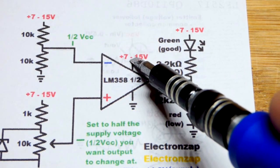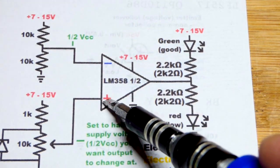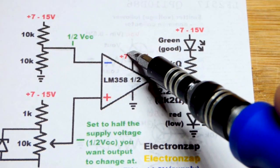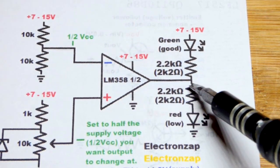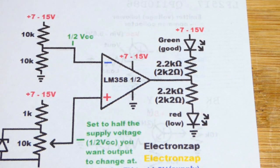If the supply voltage goes down where the halfway point is below the non-inverting input, it's lower, then we will get a high output. And that is why the red LED will light up because it is going to ground.